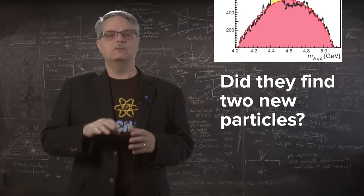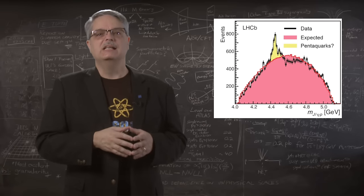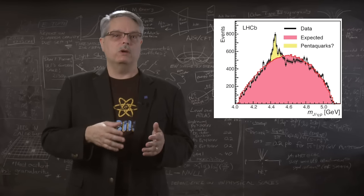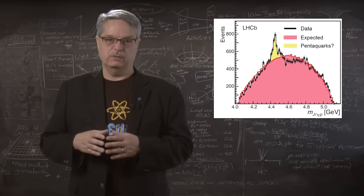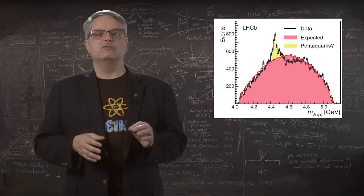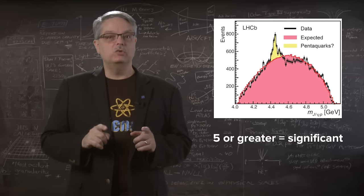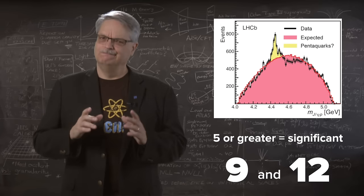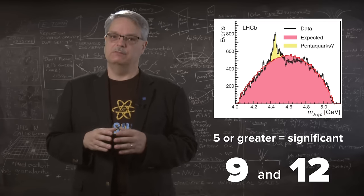Here the situation is on stronger ground. The size of the bumps are big, and big bumps means more certain. Scientists define a measurement of their certainty called the significance, where more significance means more certain. The minimum significance for discovery is 5, and the two new particles have a significance of 9 and 12, respectively. It really does look like LHCB found something.